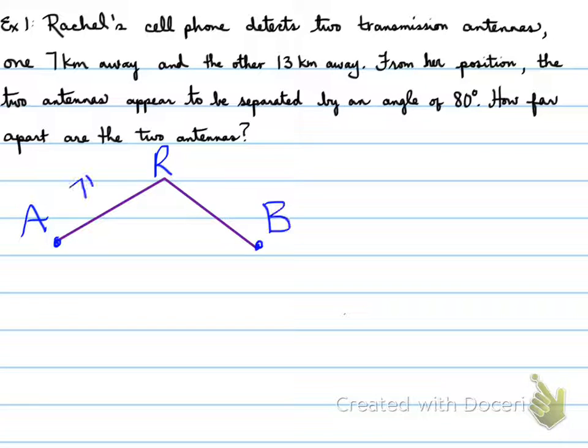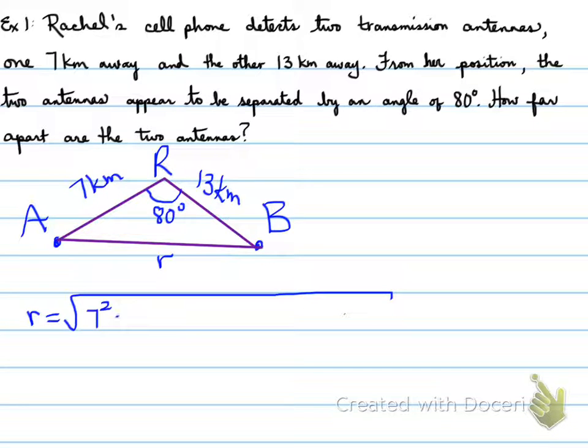Well, first thing you have to do is draw. So there's Rachel and the two antennas. One is seven kilometers away from Rachel. The other one is 13 kilometers away from Rachel. We know that the angle between the two towers is 80 degrees. Let's solve how far apart A and B are. That's little r we need. So, using little r, we're going to use cosine law because we have two sides and a contained angle.